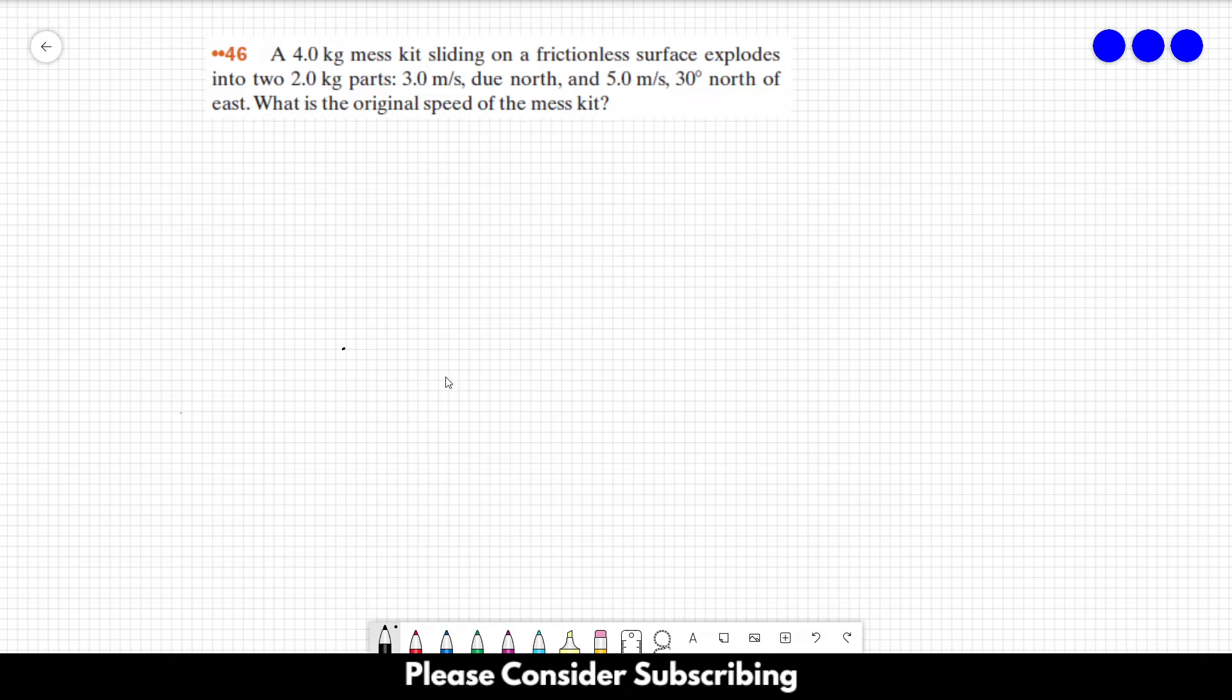Number 46. A 4 kilogram mass kit sliding on a frictionless surface explodes into two 2 kilogram parts: 3 meters per second due north and 5 meters per second 30 degrees north of east. What is the original speed of the mass kit?